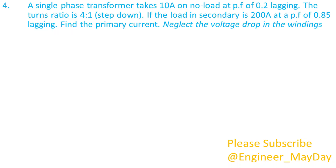Here is the last question. A single-phase transformer takes 10 amperes on no-load at a power factor of 0.2 lagging. The turns ratio is 4 to 1, step down. If the load on secondary is 200 amperes at a power factor of 0.85 lagging, find the primary current. Neglect the voltage drop in the windings.